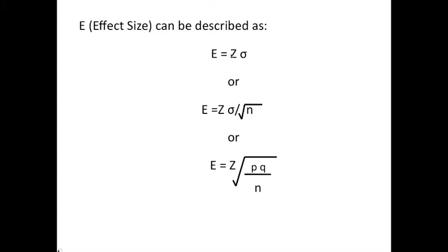Now look at this effect size. Here the effect size is z sigma, which you recognize as the effect size for a simple data distribution. We also have E equals z times sigma divided by the square root of n. This is an effect size when we're looking at an x bar distribution. We have E equals z times the square root of p times q divided by n, and this is the effect size for a proportion distribution.